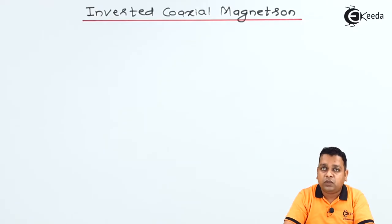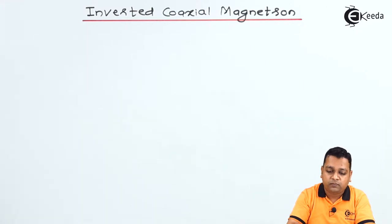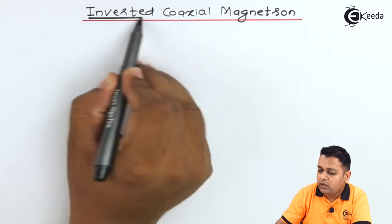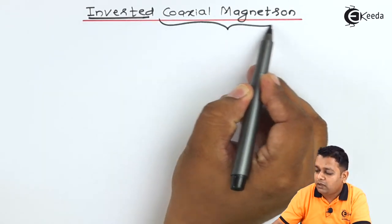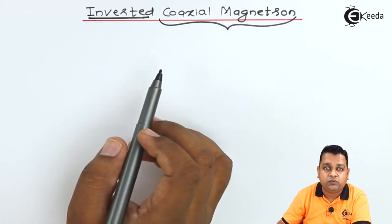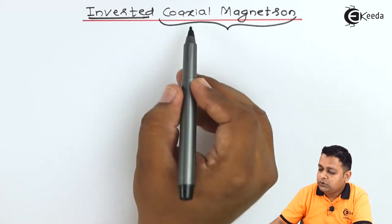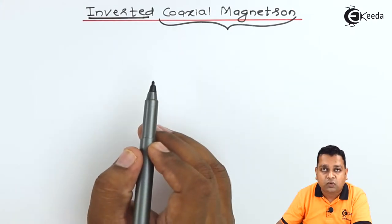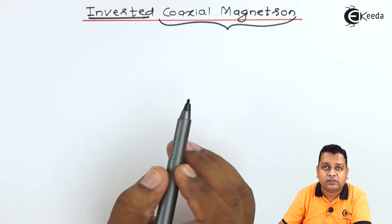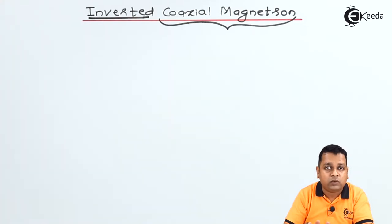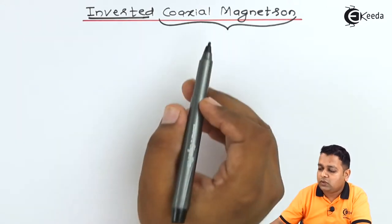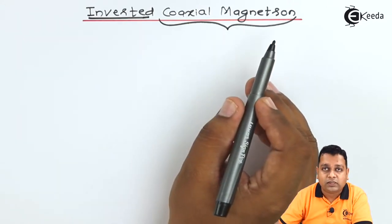Here we begin with our topic: the inverted coaxial magnetron. As the title suggests, we have already covered the coaxial magnetron in one of our previous videos in the same chapter. In the coaxial magnetron, the axis of the cathode electrode and the anode electrode is the same, and there are several slots for the purpose of resonance into the anode body.